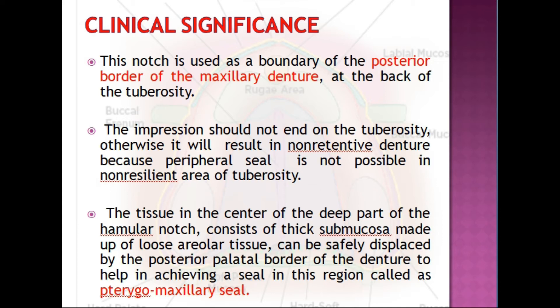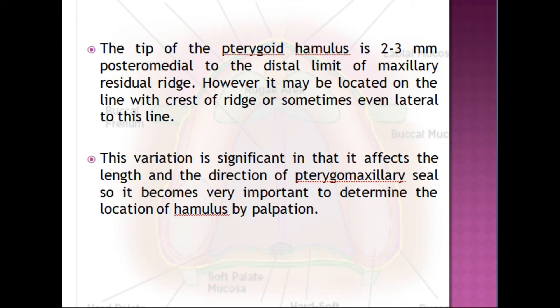At the back of the tuberosity, the impression should not end on the tuberosity, otherwise it will result in a non-retentive denture because peripheral seal is not possible in the non-resilient area of the tuberosity. The tissue in the center of the deep part of the hamular notch consists of thick submucosa made up of loose areolar tissue, and can be safely displaced by the posterior palatal border of the denture to achieve a seal in this region, called the pterygomaxillary seal.